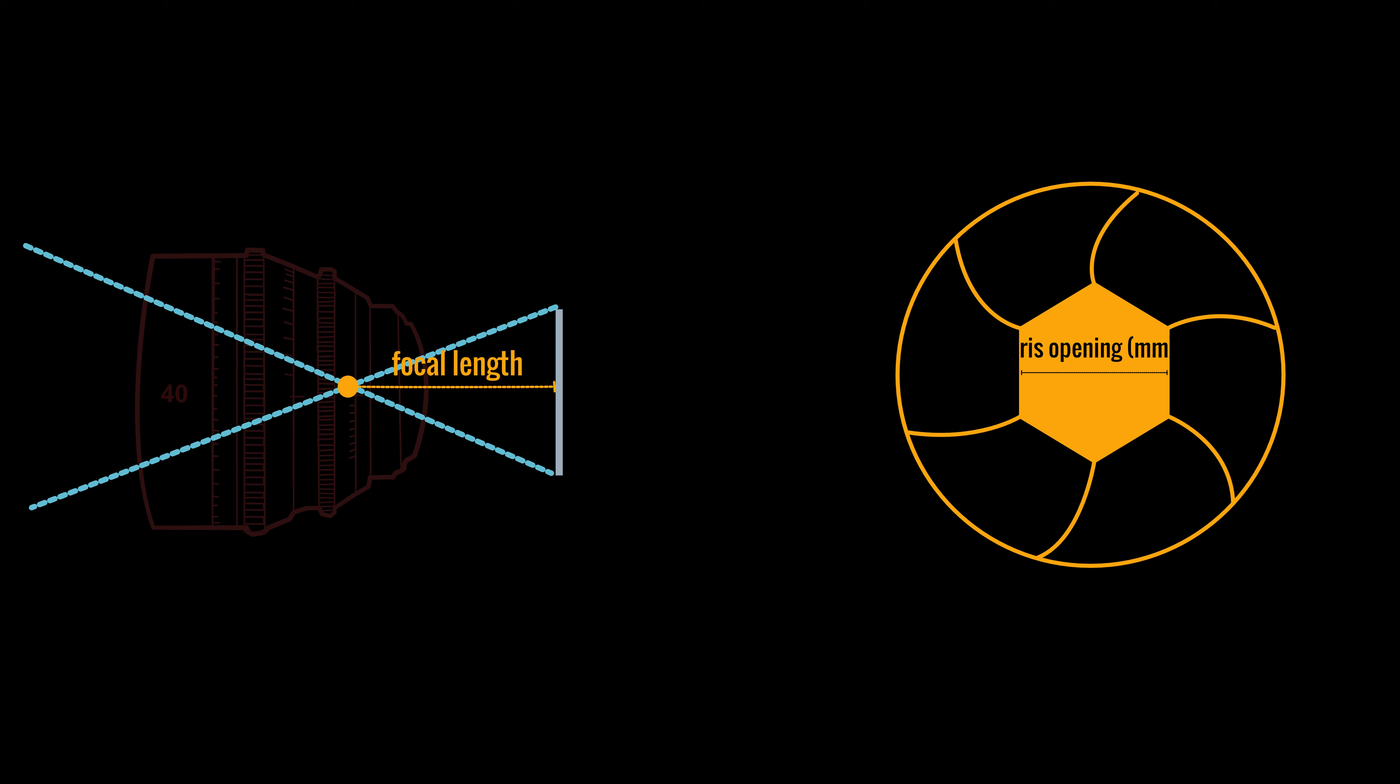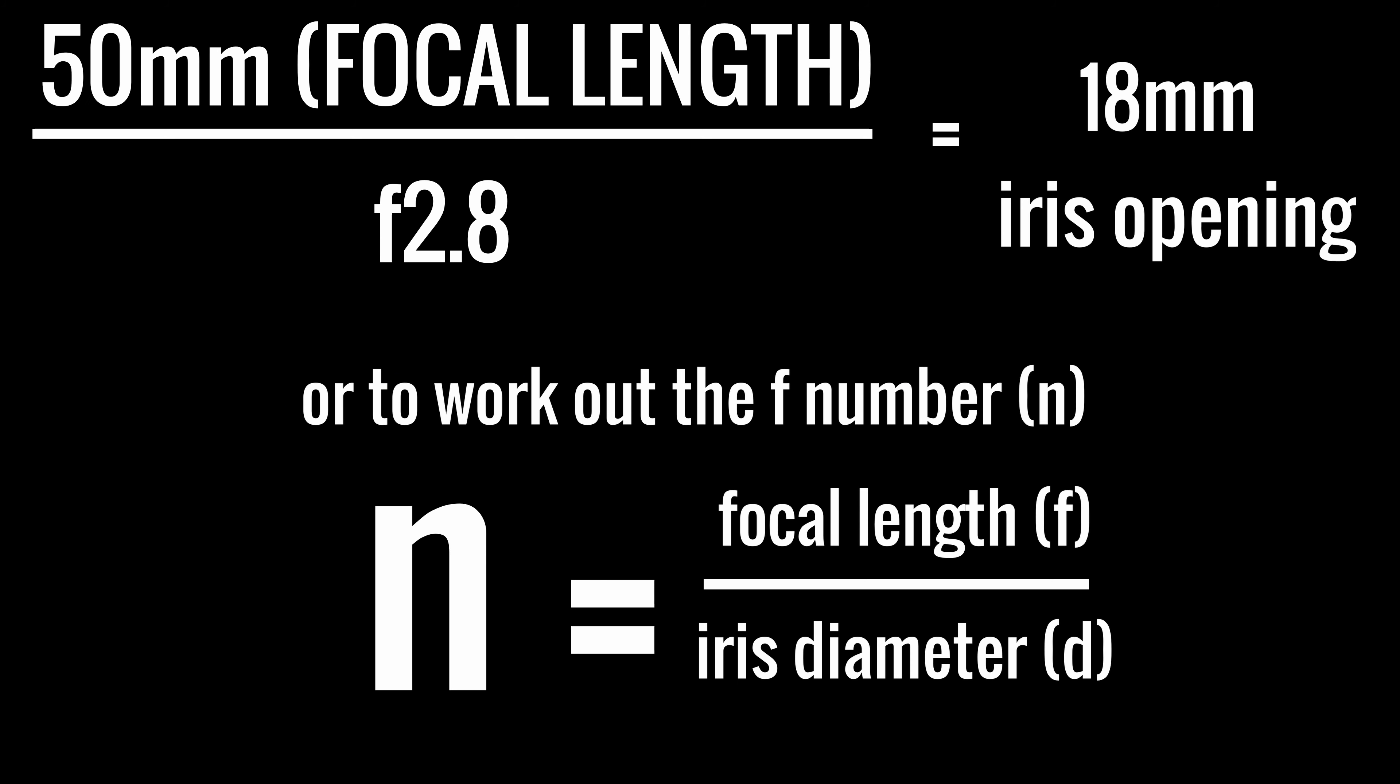You see, f-stop is the ratio between the focal length and the opening of the iris in millimeters. So a 50 millimeter lens at f/2.8 will mean that the diameter of the opening of the iris is about 18 millimeters—that's rounded up.